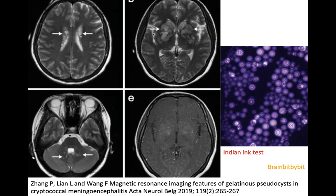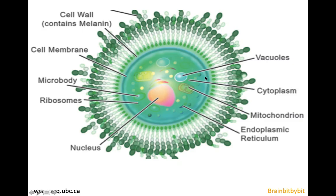Cryptococcus infection is diagnosed by doing an Indian ink test on the CSF, where you can see all the cryptococcus. It looks like a very simple yeast with a membrane, but the membrane contains melanin. The reason that cryptococcus thrives so well in the subarachnoid space and in the brain is that there are a lot of metabolites that are useful for this yeast.